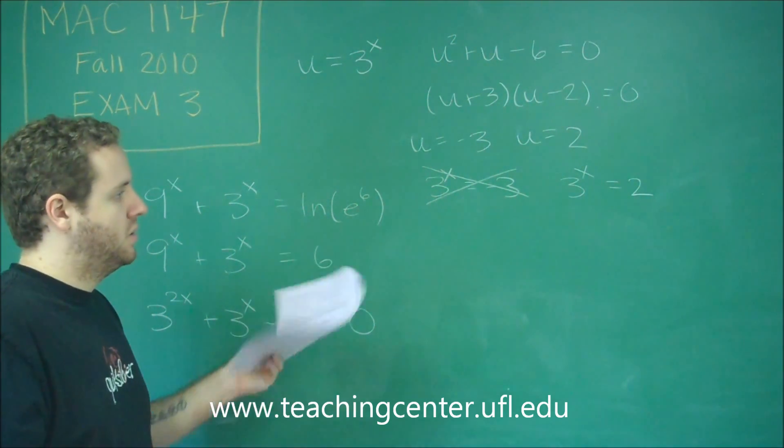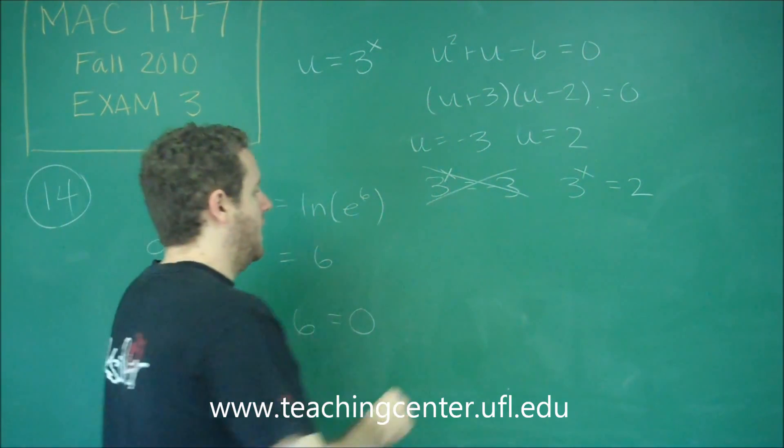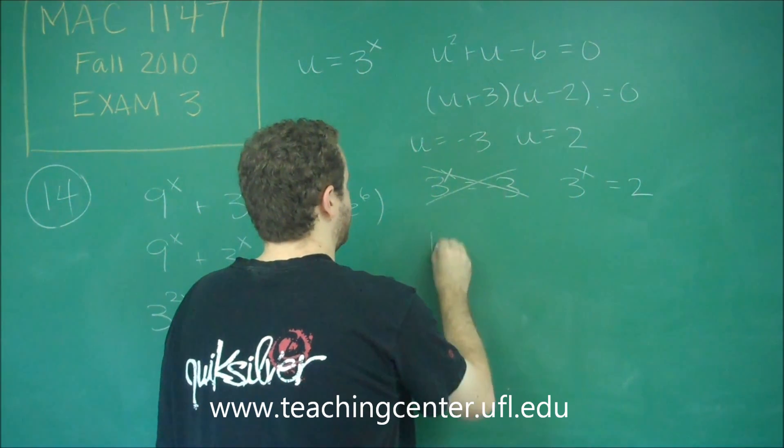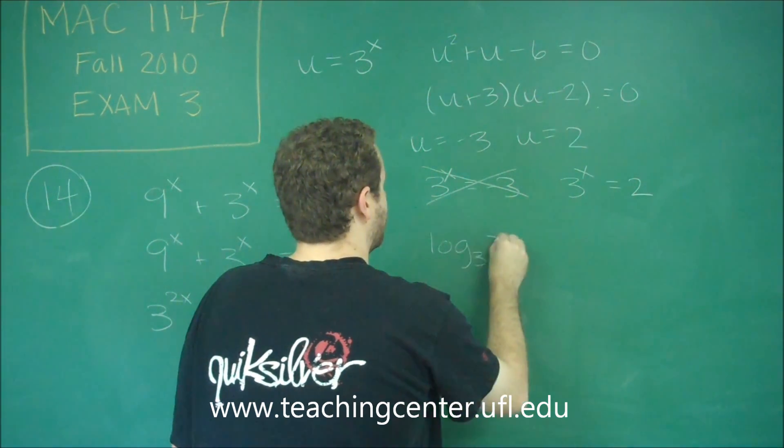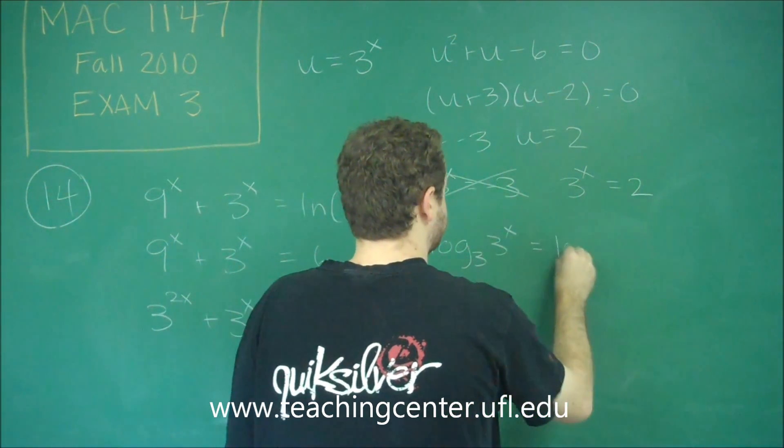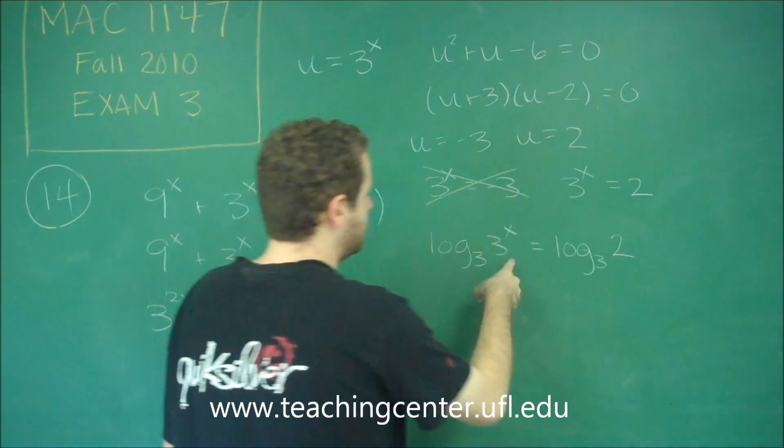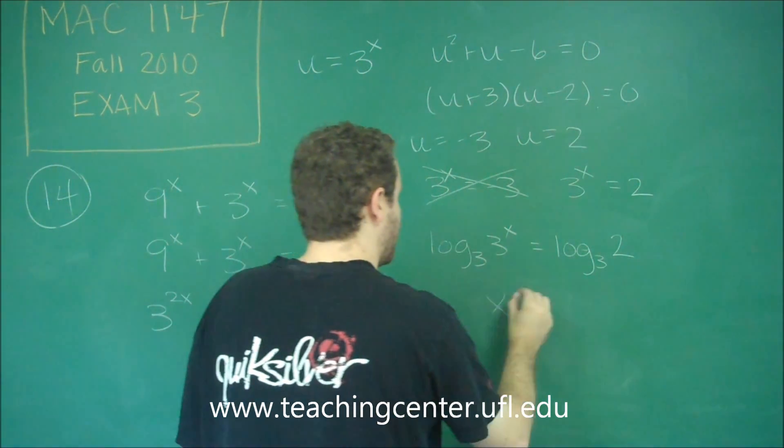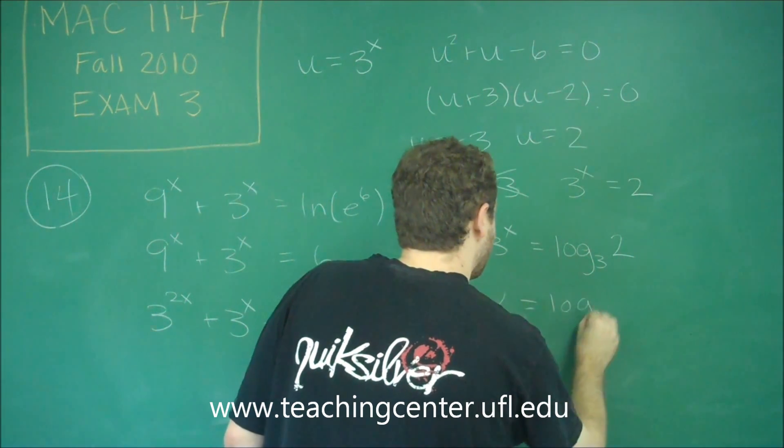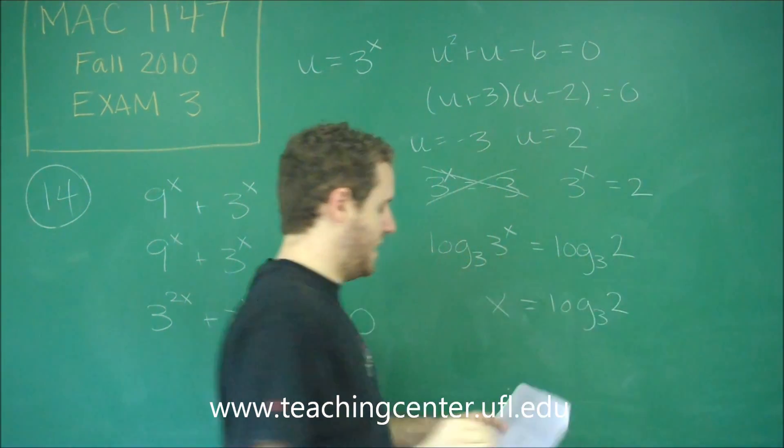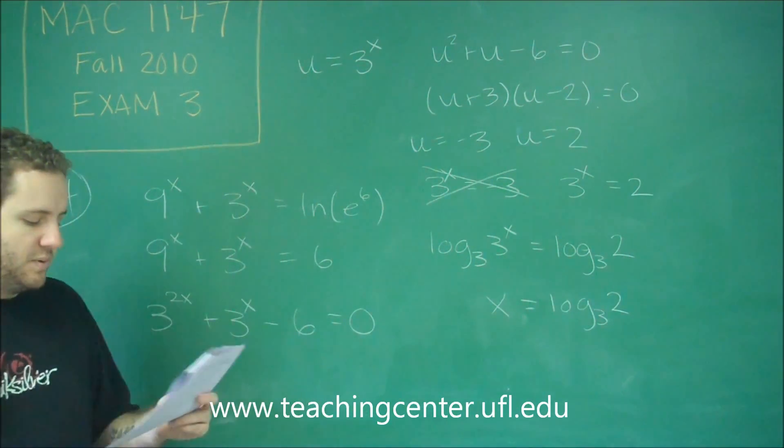3^x = 2, though, certainly could be. And if you want to solve that, let's just do log base 3 of both sides. Log base 3 of 3^x would just give us x. So we get that x = log₃(2).